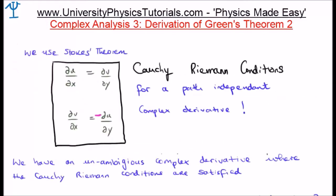So the Cauchy-Riemann conditions are written in front of you. These are for a path independent complex derivative. This is where our function is made up of a real component and an imaginary component, u and v, and each of those are a function of x and y. What we're going to do is use Stokes' theorem and see if we can come up with Green's theorem using these Cauchy-Riemann conditions.